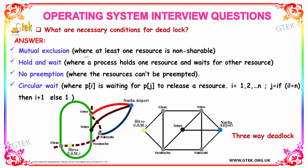Mutual exclusion means at least one resource is non-shareable. Hold and wait is a situation where a process holds one resource and is waiting for another resource. No preemption is where resources cannot be preempted. Circular wait is where process PI is waiting for PJ to release a resource, whereas PJ is waiting for a resource held by PI.